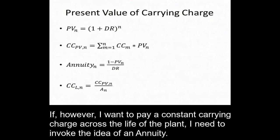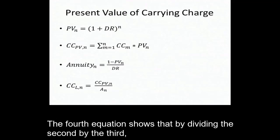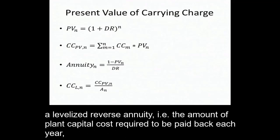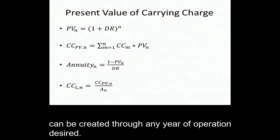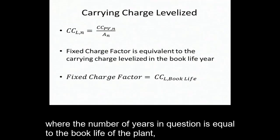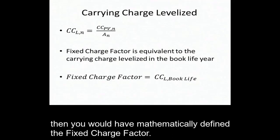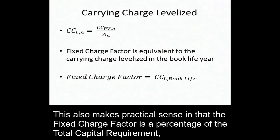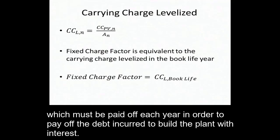If, however, I want to pay a constant carrying charge across the life of the plant, I need to invoke the idea of an annuity. The fourth equation shows that by dividing the second by the third, a levelized reverse annuity — i.e., the amount of plant capital costs required to be paid back each year — can be calculated through any year of operation desired. If you were to create an annuity for the carrying charges where the number of years in question is equal to the book life of the plant, then you would have mathematically defined the fixed charge factor. This also makes practical sense in that the fixed charge factor is the percentage of the total capital requirement which must be paid off each year in order to pay off the debt incurred to build the plant with interest.